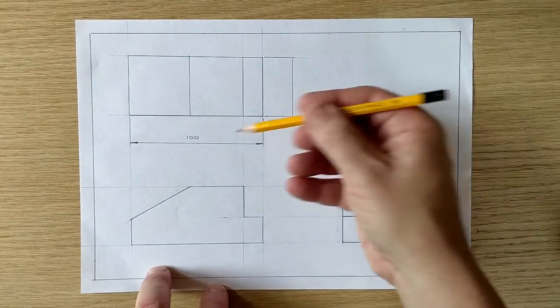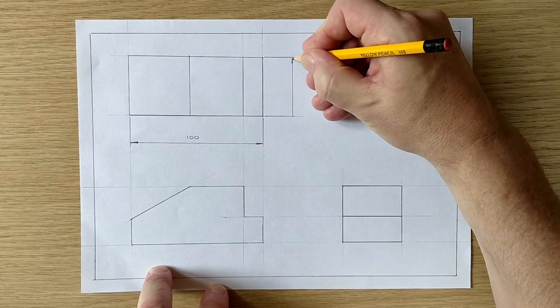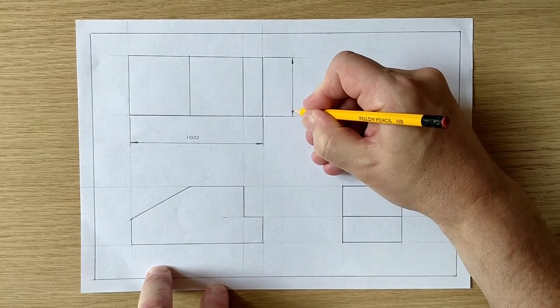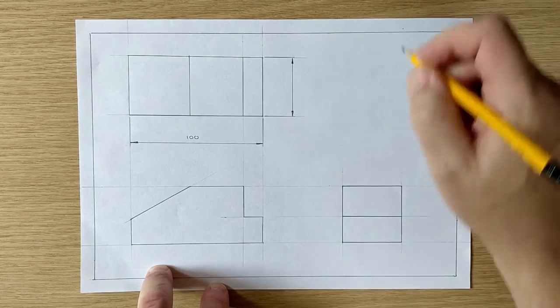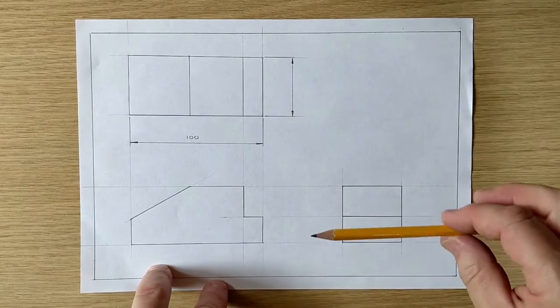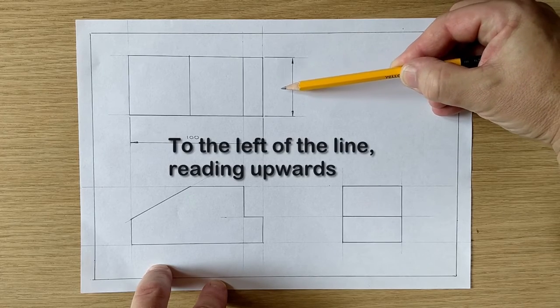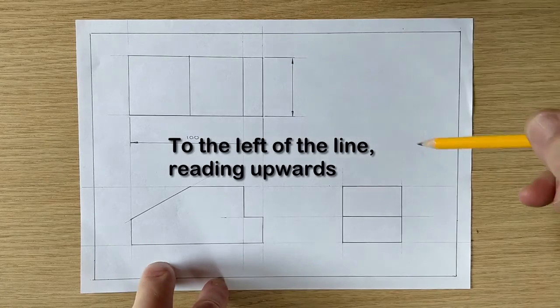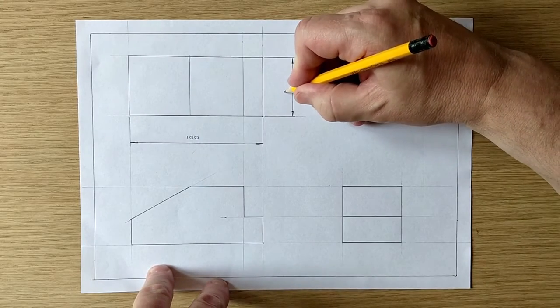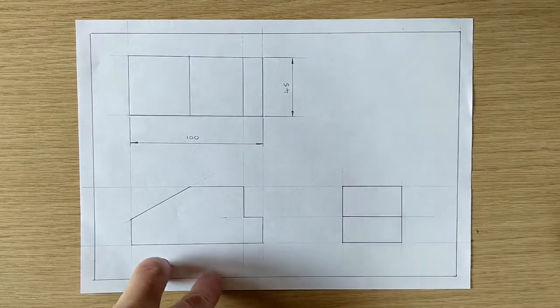And you can see that's pretty much the same as we did down here. I'll add my arrowheads slim and neat. Try and make them all the same size if you can. Now where do we put the number? Well for the ISO standard that we're using, the number goes here to the left of that vertical line and it reads upwards.